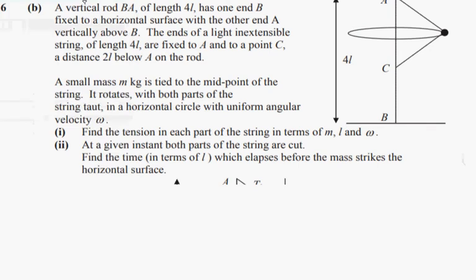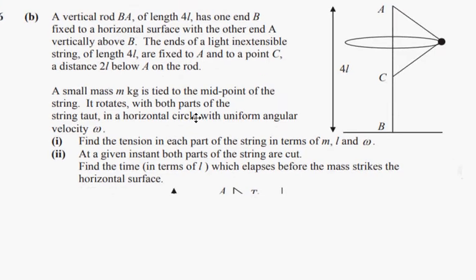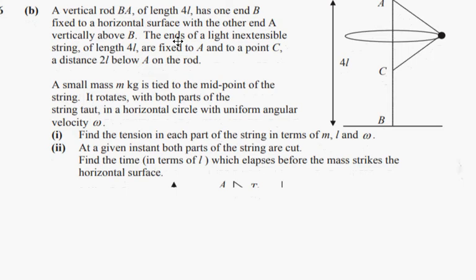A vertical rod BA of length 4L has one end B fixed to a horizontal surface with the other end A vertically above B. The ends of the light and extensible string of length 4L are fixed to A and to a point C, a distance 2L below A on the rods.